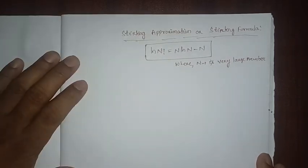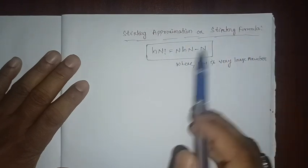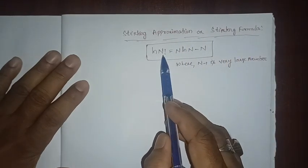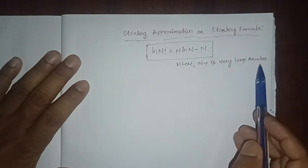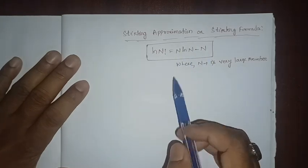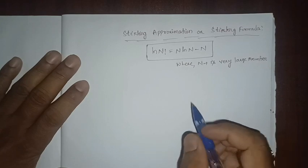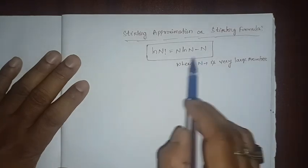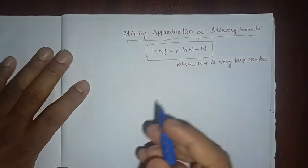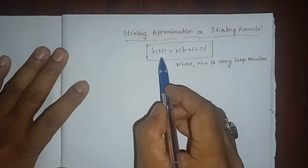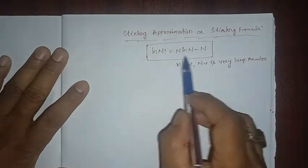Hello everyone. In this video we are going to discuss Stirling's approximation, or Stirling formula, that is ln(n!) = n·ln(n) − n, where n is a very large number. This formula was given by the mathematician Stirling, and on the behalf of his name this formula is named Stirling's approximation. In this video we are going to prove this formula for when n is very large.